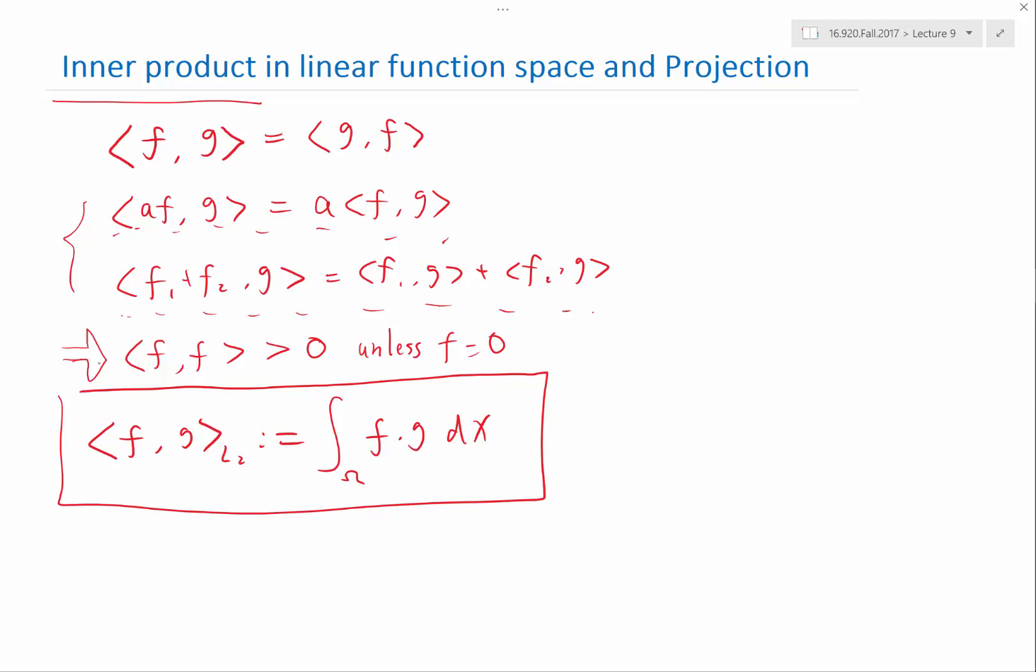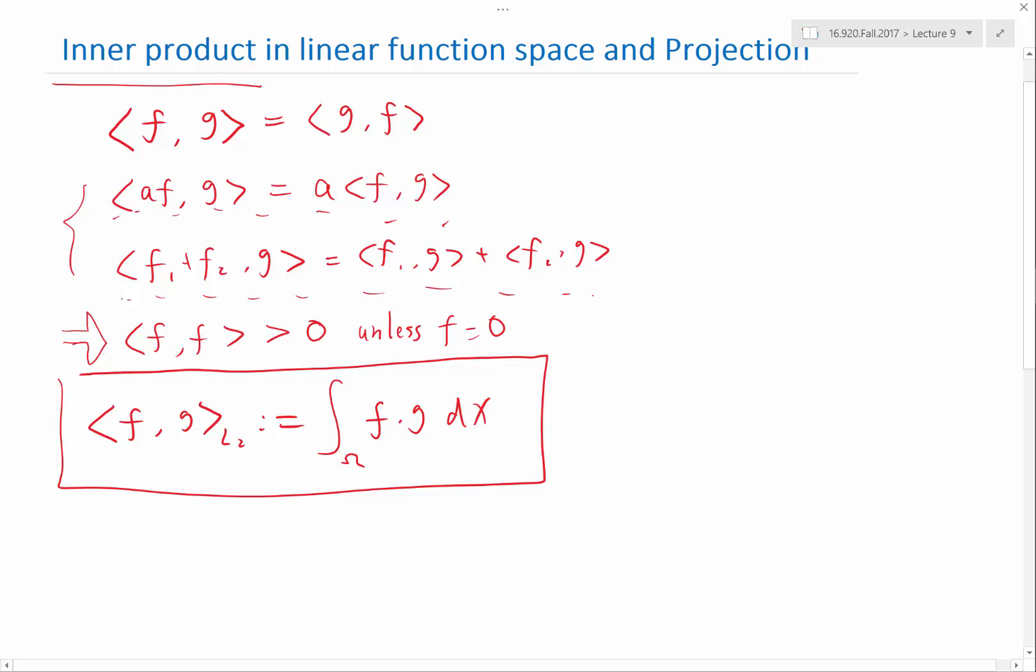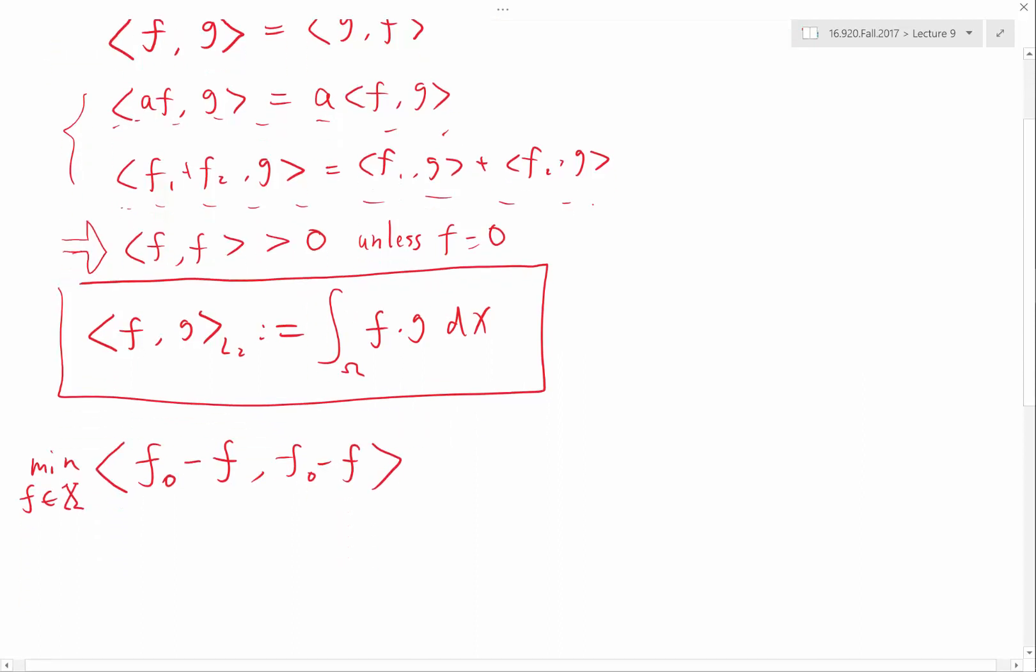So if I want the distance between f0 and f, which lives in a more restrictive space than f0, to be as close as possible, basically I want to minimize, for f that lives in that space, f0 minus f inner product with f0 minus f. So this gives us f is as close to f0 as possible, given that f has to live in this space x.